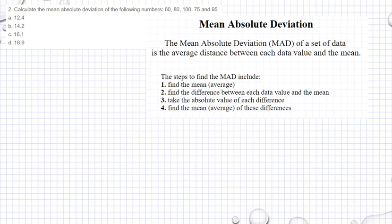Question number two is about mean absolute deviation. That's why I pasted the definition and the steps in finding mean absolute deviation. The mean absolute deviation of a set of data is the average distance between each data value and the mean. The steps to find the mean absolute deviation include: find the mean.